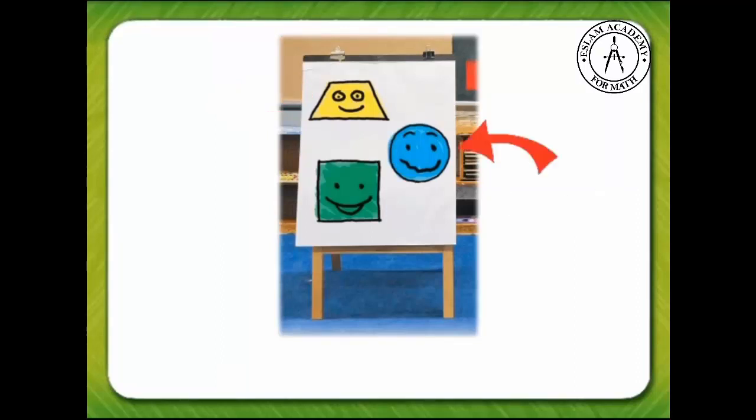The blue shape on Ella's easel is round. What is the name of this shape? Did you say circle? If you did, you're correct.